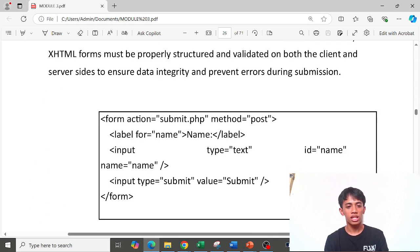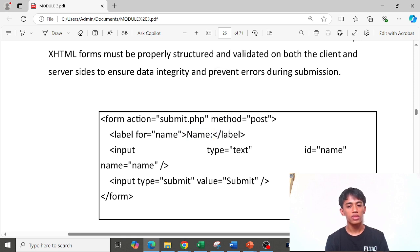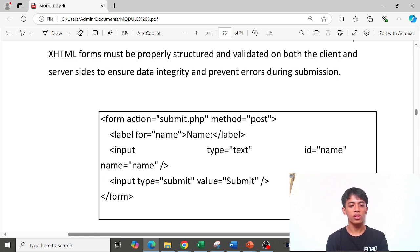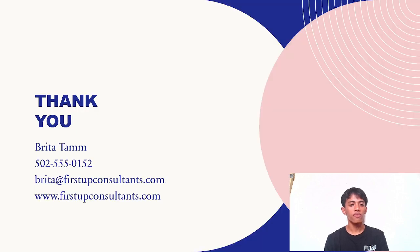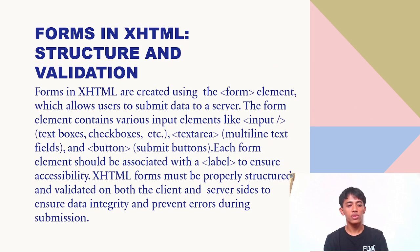Here is an example of a form code: the form tag with the method attribute, the label with a name variable, the input tag with an ID, text type attribute, and an input type submit with value 'submit'. That's all for this video. Thank you.